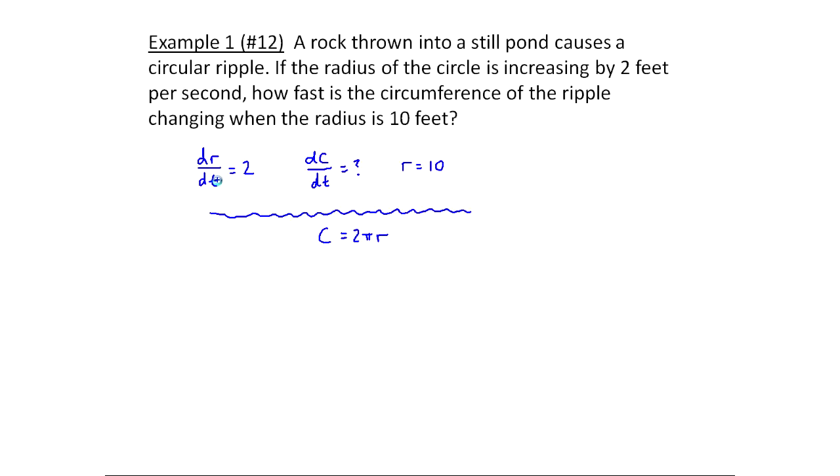Everything's in terms of d/dt. So what I'll do is take d/dt of both sides of this equation. So I do d/dt of c equals d/dt of 2πr. When I take the derivative of c I get 1, however this is with respect to t, so I have to multiply because of the chain rule by c prime.